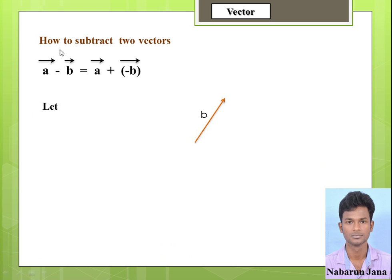But we don't know how to subtract vectors directly — we know how to add them. So we can subtract by applying the formula of addition. Let A and B be vectors. So A minus B can be written as A plus (minus B). First we need to find how to oppose a vector, that is how to negate a vector.